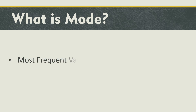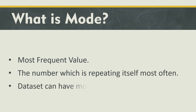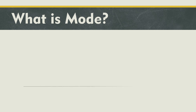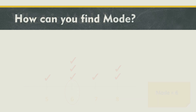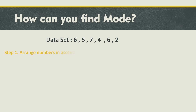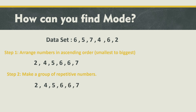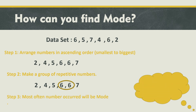Let's discuss mode — it is the most easiest one. Mode is the most frequent value, the number which repeats itself most often. A data set can have more than one mode. For example, in a survey counting kids by age, if most kids are in the age-6 category, then the mode is 6. To find mode: step one, arrange numbers in ascending order; then make groups of repetitive numbers — the most often occurring number will be the mode.